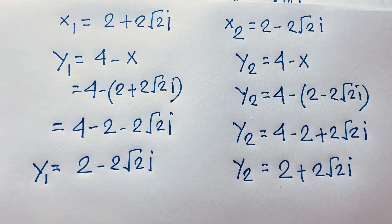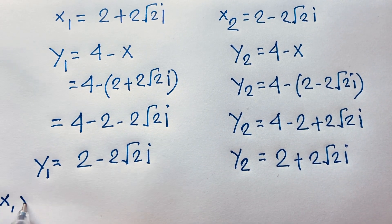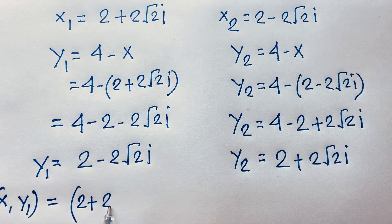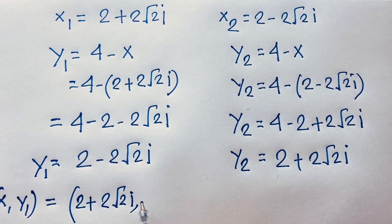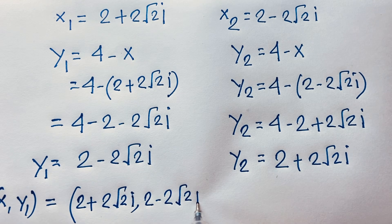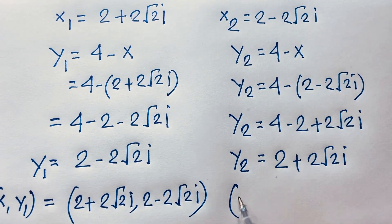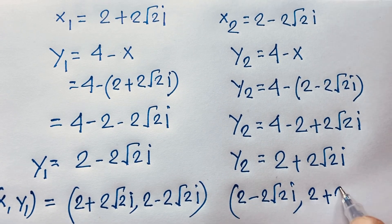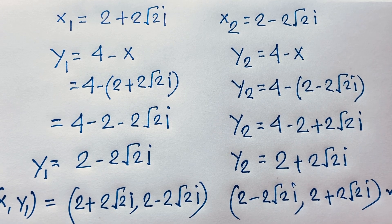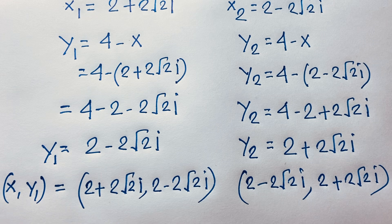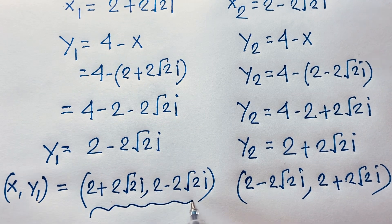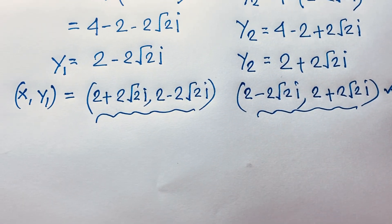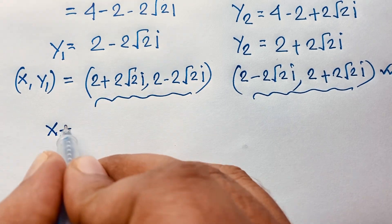So when x₁ equals 2 plus 2√2·i, then y₁ equals 2 minus 2√2·i. And when x₂ equals 2 minus 2√2·i, then y₂ equals 2 plus 2√2·i. Both solutions are complex numbers — there is no real solution. Both x and y are complex numbers.